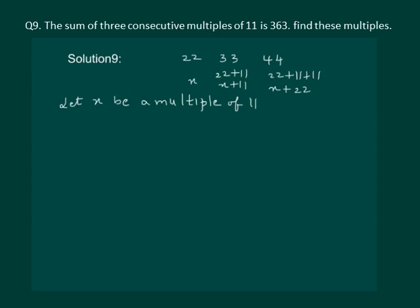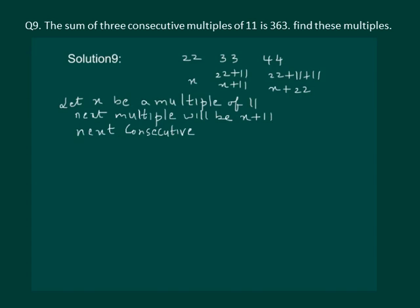Let x be a multiple of 11. Then the next consecutive multiple will be x plus 11 and the one after will be x plus 22. In the question it is given that the sum of 3 consecutive multiples of 11 is 363, so x plus (x plus 11) plus (x plus 22) is equal to 363.